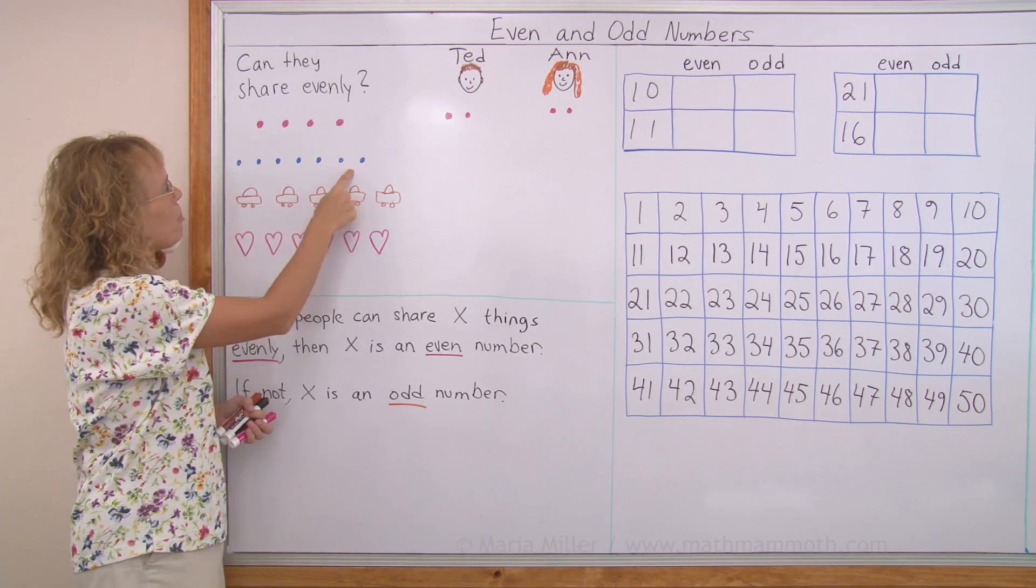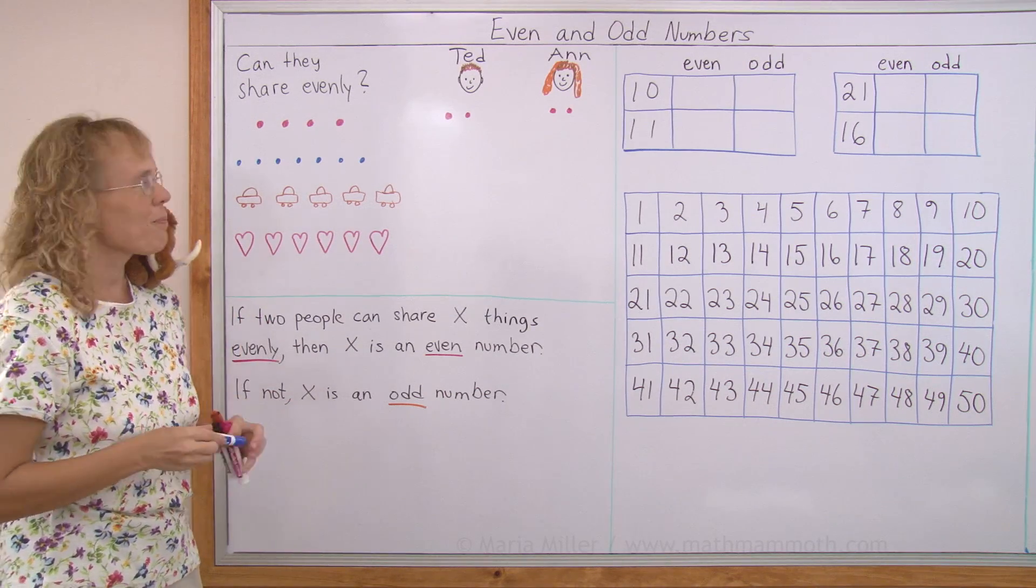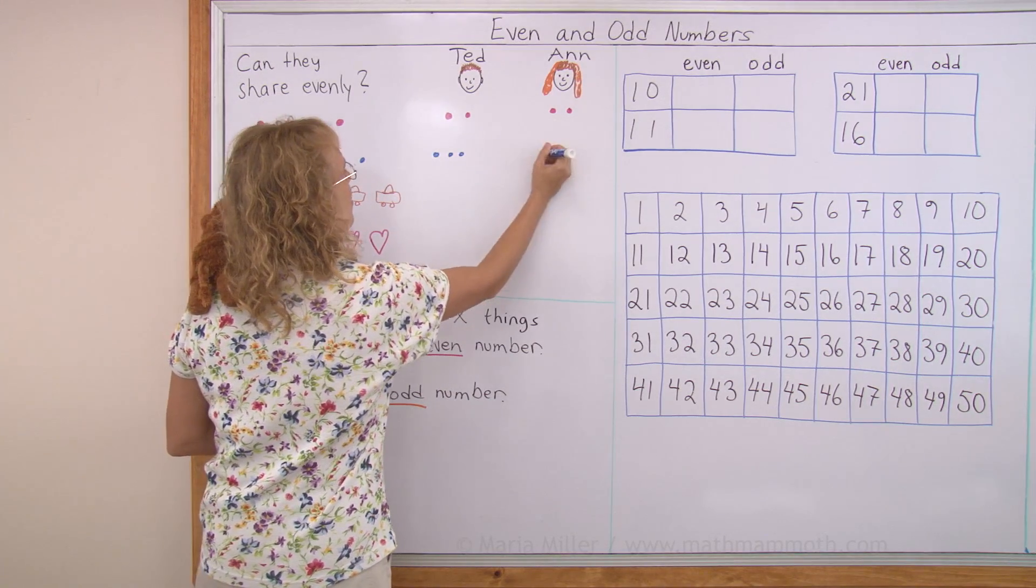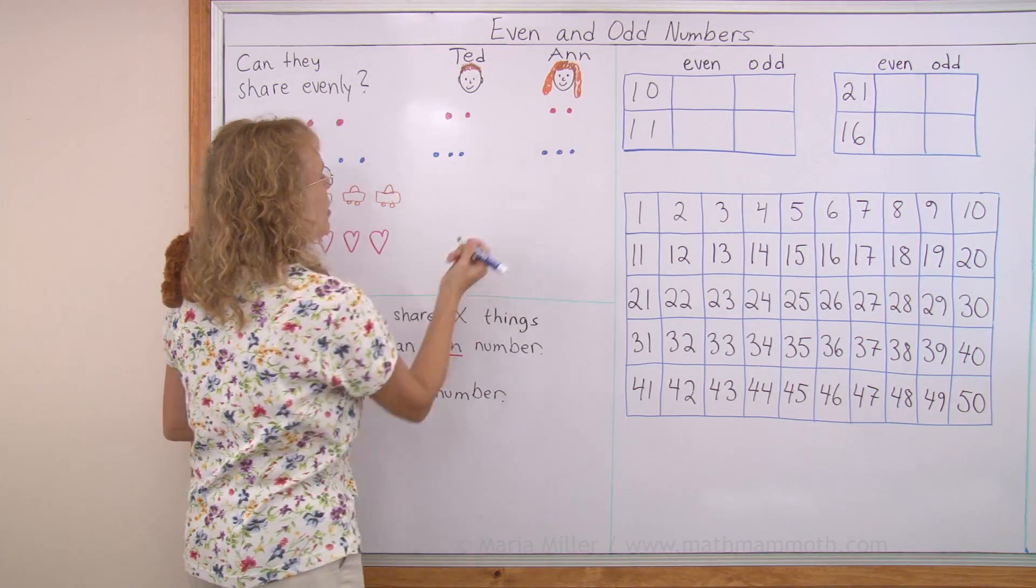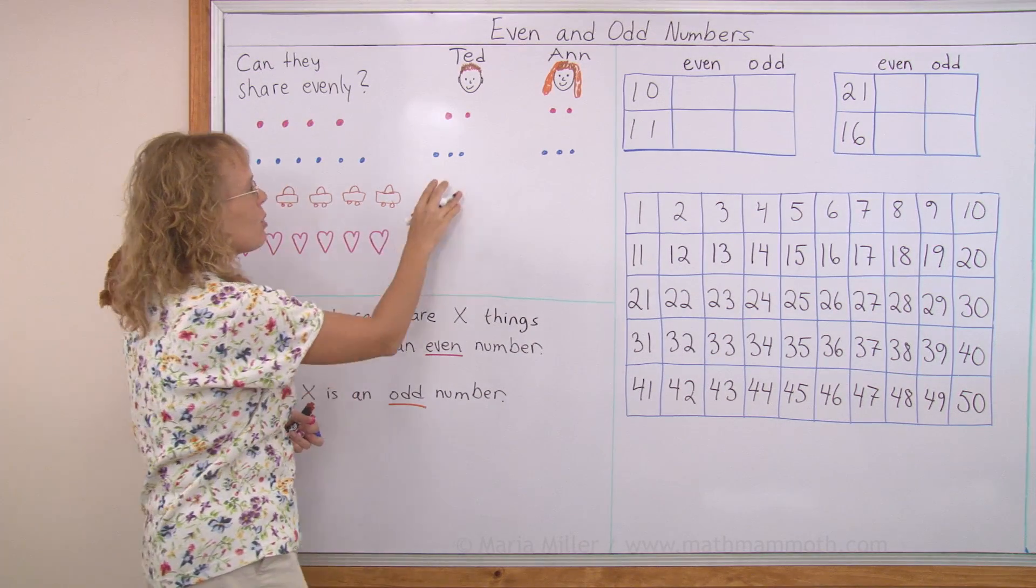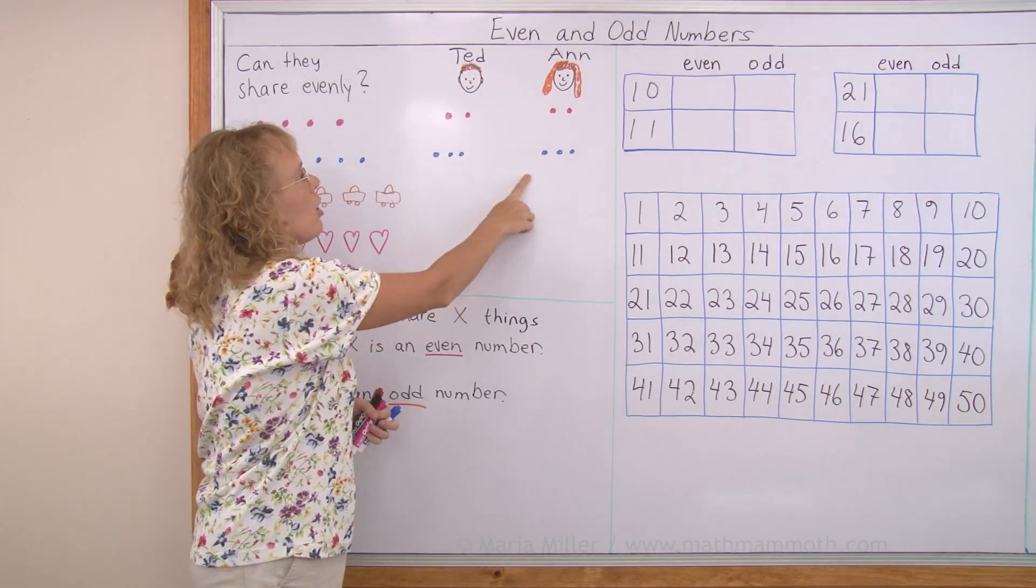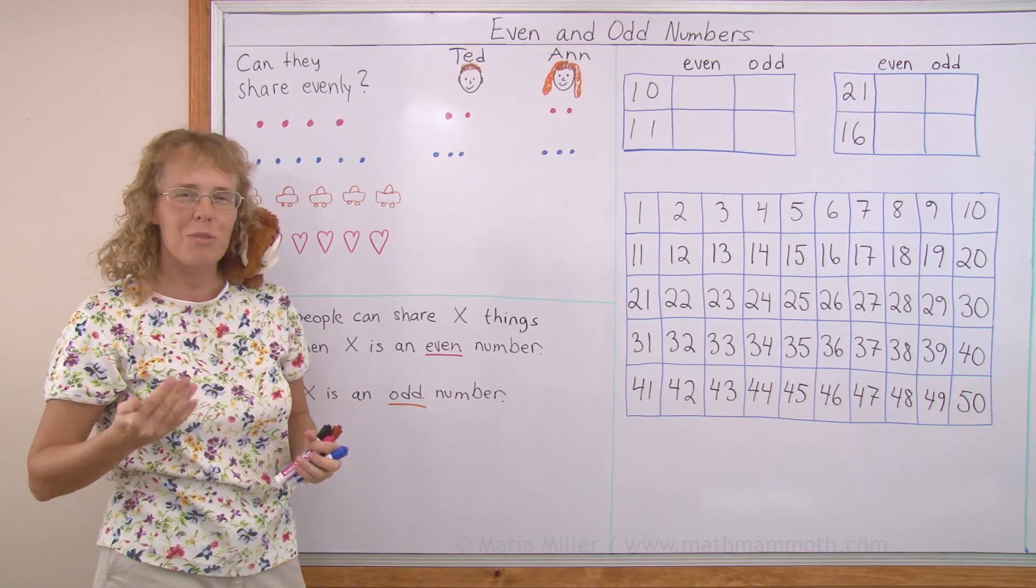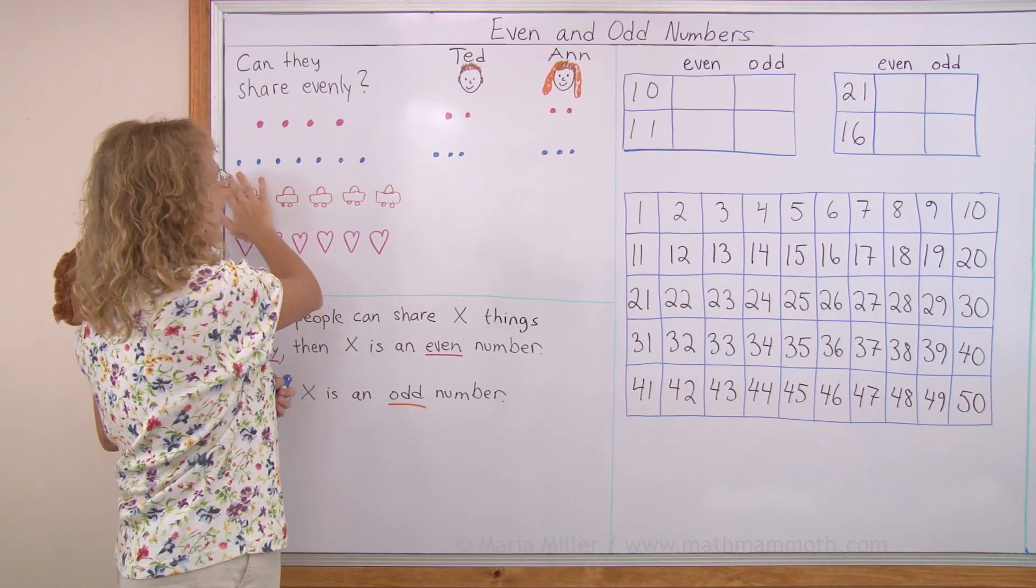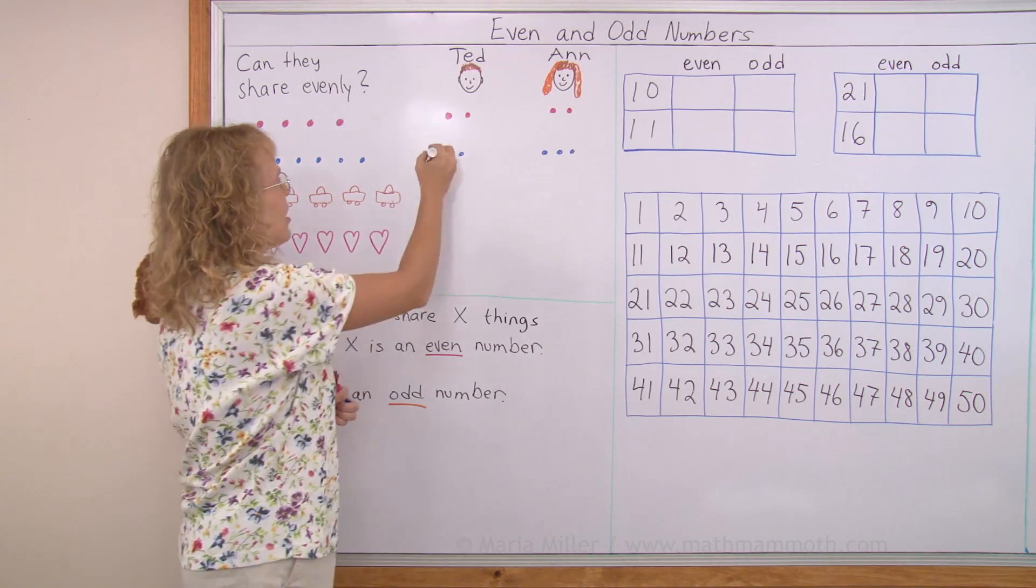Now, how about these blueberries? One, two, three, four, five, six, seven. Seven blueberries, can you share them evenly? Or can they share them evenly? Let's say that I put three here and three here. But that makes six. And now there's seven of them, see? So, I cannot put, if I put one here, then Ted has one more. Or if I put it here, then Ann would have one more, so it wouldn't be an even sharing. So, therefore, I cannot share these, they cannot share these seven blueberries evenly. So, seven is not an even number. This didn't work out.